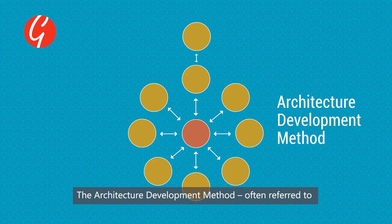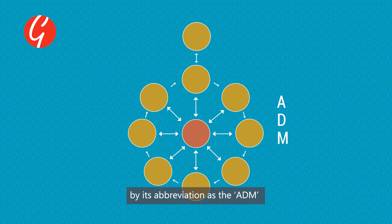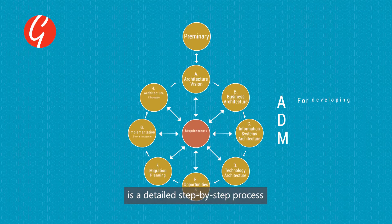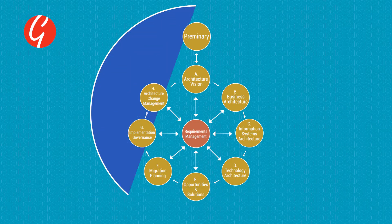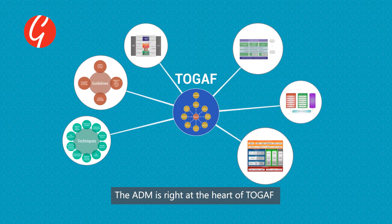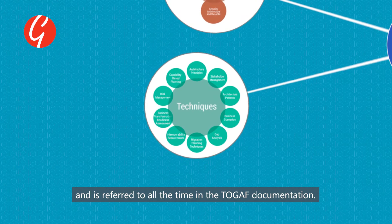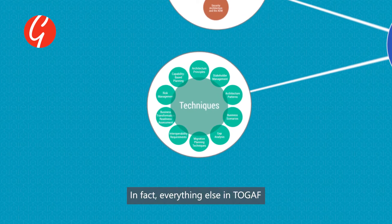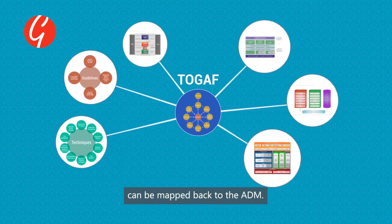The architecture development method, often referred to by its abbreviation as the ADM, is a detailed step-by-step process for developing or changing an enterprise architecture. The ADM is right at the heart of TOGAF and is referred to all the time in the TOGAF documentation. In fact, everything else in TOGAF can be mapped back to the ADM.